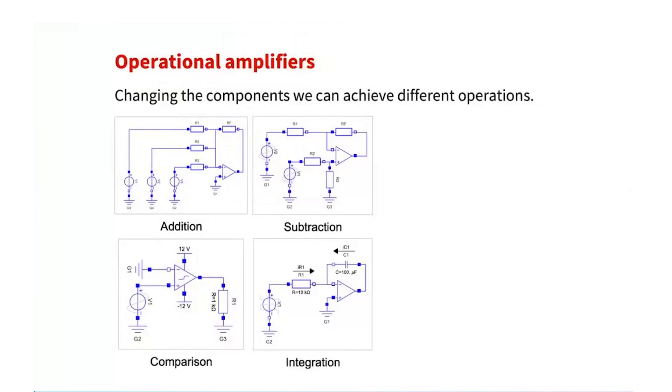And as I mentioned before, operational amplifiers are integrated circuits that allow us to perform operations using voltages. Here we can see four different circuits in which we use the operational amplifier. Here you can see it on each. And just by changing the components that we surrounded, just changing the connections, we can make it perform different operations.